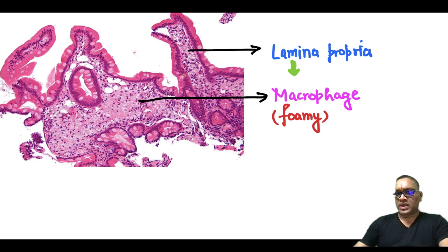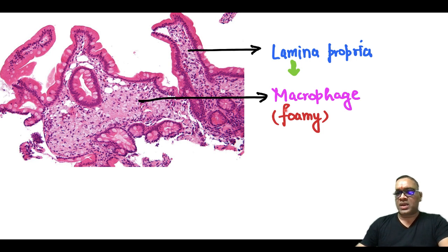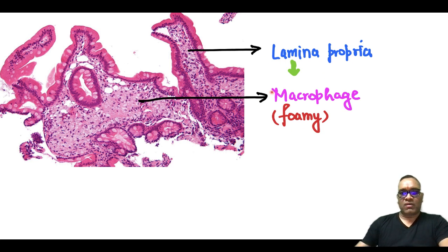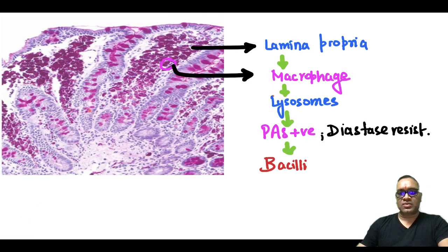Now this is the biopsy. You can see this is the H&E section and the full Lamina propria is showing you foamy macrophages. So the Lamina propria is showing foamy macrophages in this biopsy, which we can confirm by PAS-positive and diastase staining.